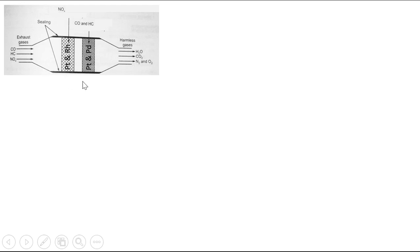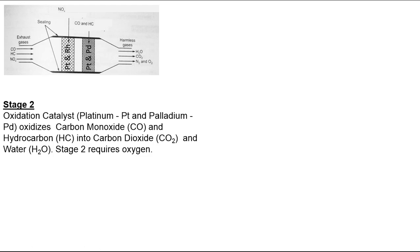A question will come up: platinum was acting as a reduction catalyst in stage 1, and now in stage 2 it will act as an oxidation catalyst. Platinum helps in both reduction and oxidation, but rhodium only helps in reduction. In stage 2, the oxidation catalyst — platinum and palladium — oxidizes carbon monoxide and unburnt hydrocarbons entering from stage 1, converting them into carbon dioxide (CO2) and water (H2O).